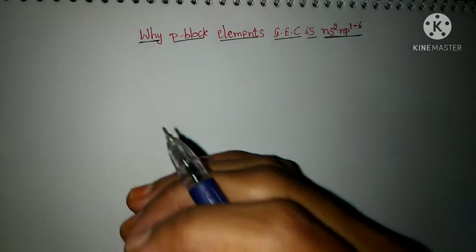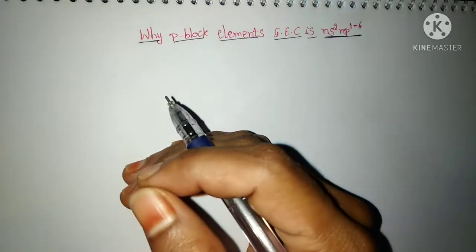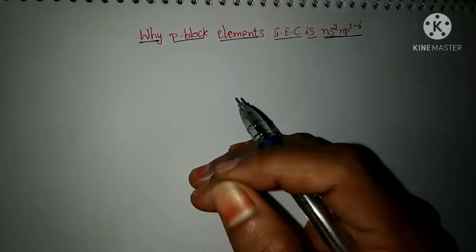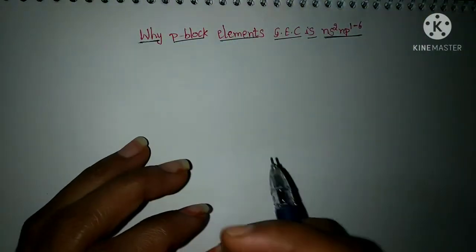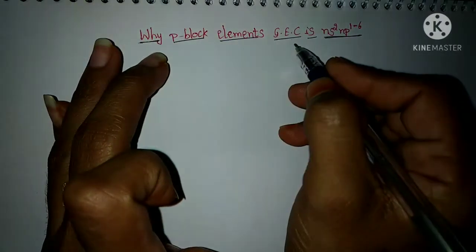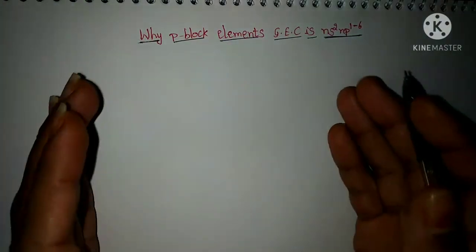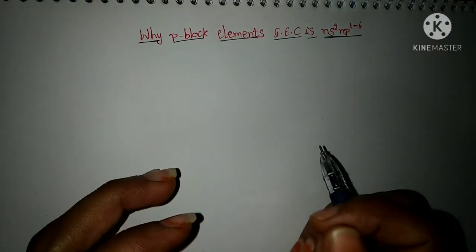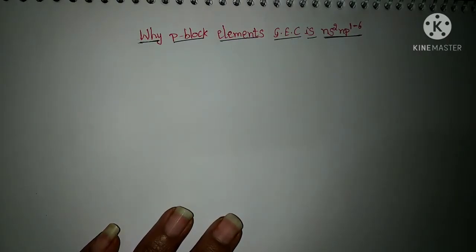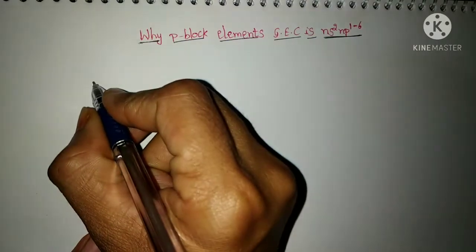For this, first of all we want to know what groups are present in P block and what is the general electronic configuration for one specific group. If you know that, we can find the overall P block general electronic configuration and get clear information. Now you will see what groups are present in the P block.